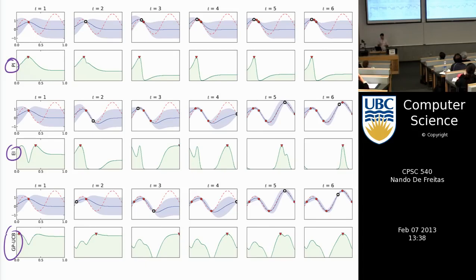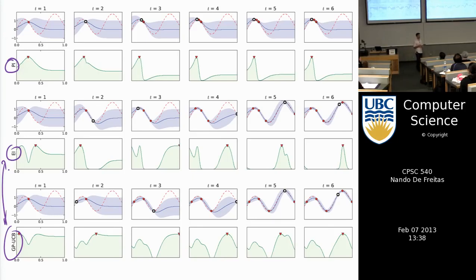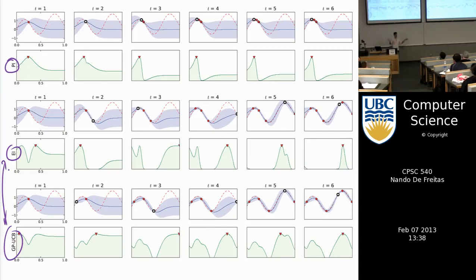Expected improvement and UCB tend to perform similarly. Probability of improvement does worse in general, but if you do know the maximum the function can attain, probability of improvement will do much better than the alternatives. Thompson sampling performs very similarly to expected improvement.